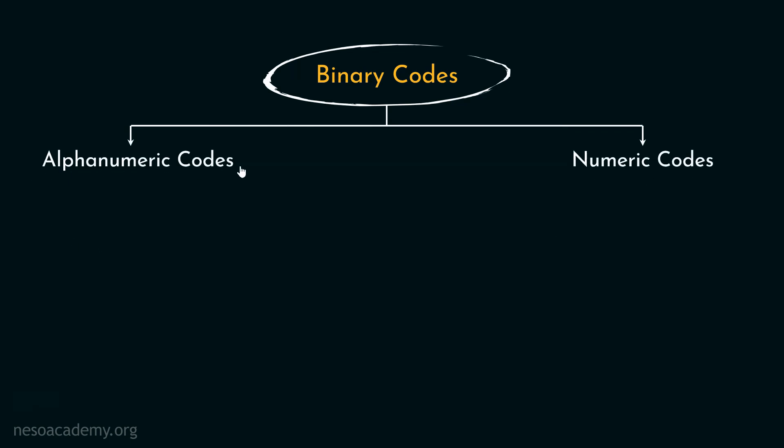Coming to the alphanumeric codes, these are actually the combinations of alphabets and numbers or in other words, character sets which can be represented using binary codes. Now, there are various alphanumeric codes available out there. But the basic ones are first ASCII, that is American Standard Code for Information Interchange. Thereafter, EBCDIC or Extended Binary Coded Decimal Interchange Code. Now ASCII is of 7 bits and EBCDIC is of 8 bits.